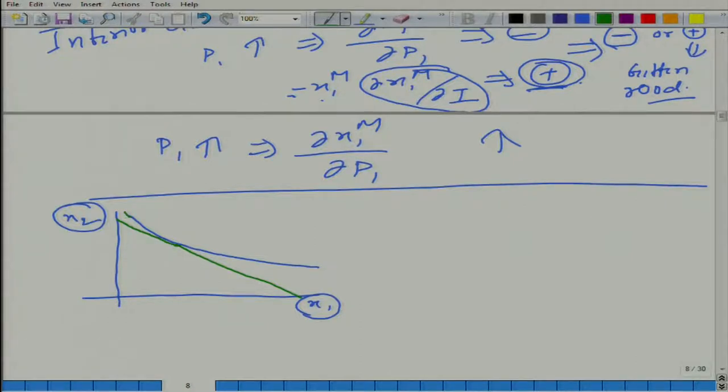What is happening when government gives subsidy on gas cylinder? What will happen to the budget line? Budget line will rotate. In which direction will it rotate? Anticlockwise, pivoted at x₂. So it will be something like this.